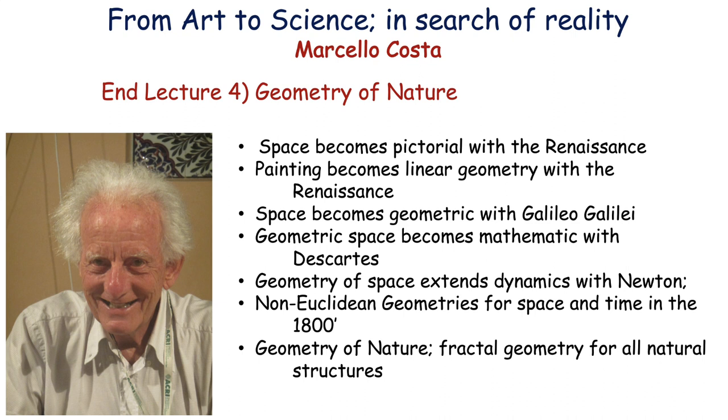Space became geometric with Galileo Galilei. Geometric space became mathematic with Descartes in the 1600s. Then geometry of space extends dynamics with Newton. Non-Euclidean geometry for space and time in the 1800s gave rise to the modern theory of Einstein - Relativity. Then I dealt with the geometry of nature with the idea of fractal geometry for all natural structures.